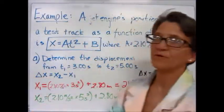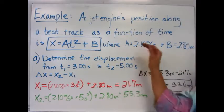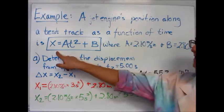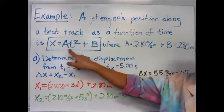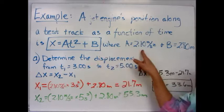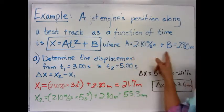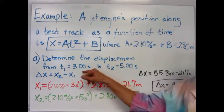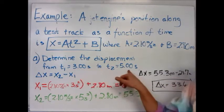Our first example: We have a jet engine along a track, and its position as a function of time is x equals at² plus b, where a is 2.1 meters per second squared and b is 2.8 meters. Determine the displacement from 3 seconds to 5 seconds.